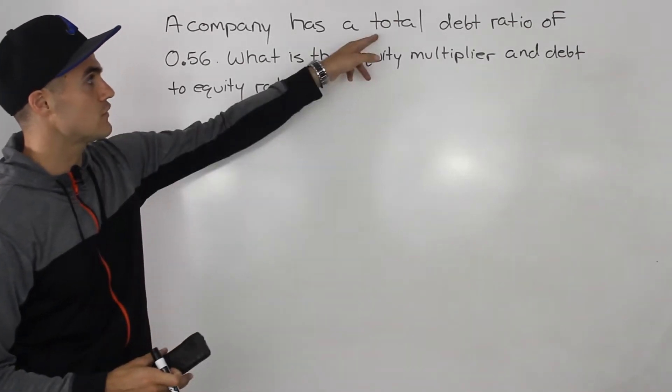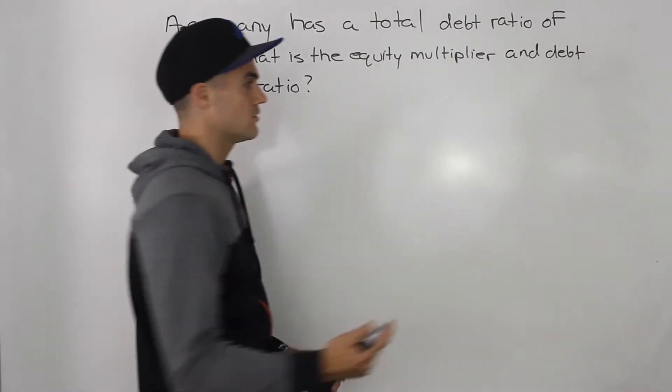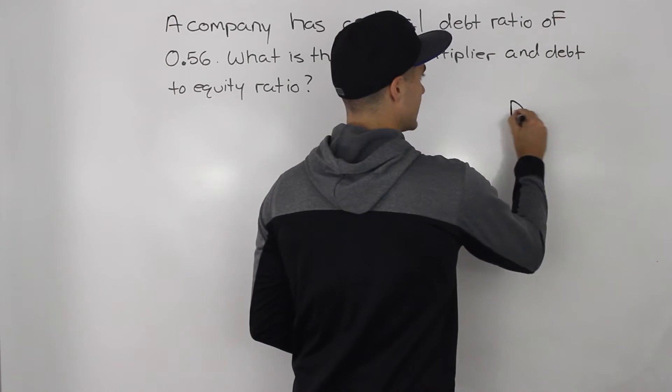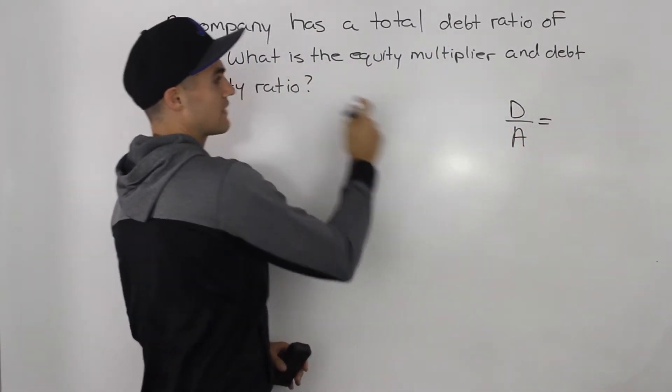And in this case, we're given the total debt ratio of 0.56. Now, the total debt ratio is what? It's debt over assets. And that's equal to 0.56.